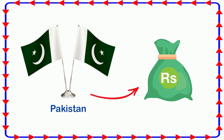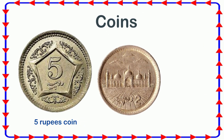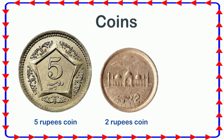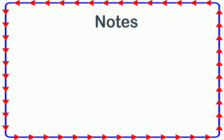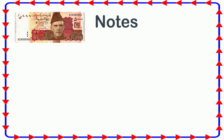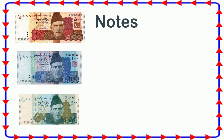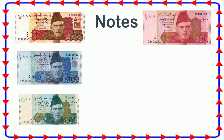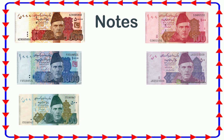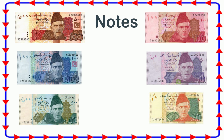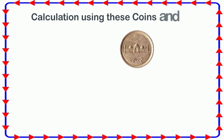Let's recap the notes and coins of Pakistan. Coins: this is a five rupees coin, this is a two rupees coin, this is a one rupee coin. Notes: this is a five thousand rupees note, this is a one thousand rupees note, this is a five hundred rupees note, this is a one hundred rupees note, this is a fifty rupees note, this is a twenty rupees note, and this is a ten rupees note. Let's do some calculation using these coins and notes.